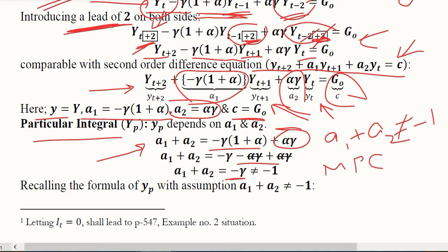So minus gamma is actually the negative version of MPC. About MPC we know that it is somewhere between 0 and 1, so it is not equal to 1, neither equal to 0. If it is not equal to 1, it means that it is minus some sort of fraction that is less than 1, so we can say it is not equal to minus 1.